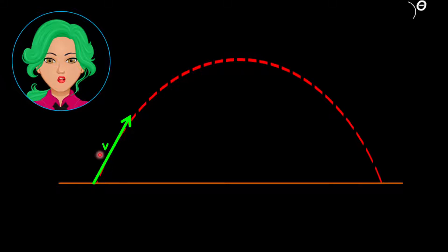2. The object leaves the ground at an angle. Remember we consider the ground to be flat or level.